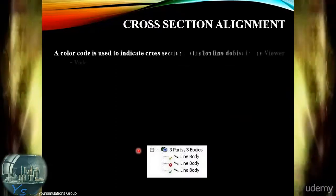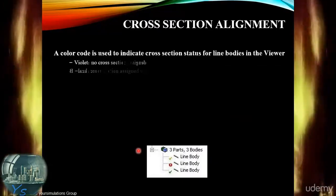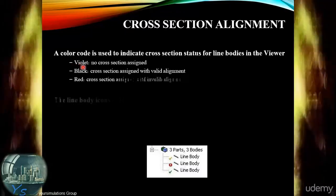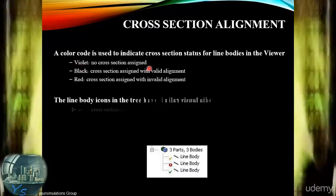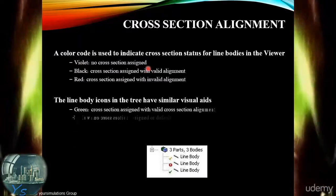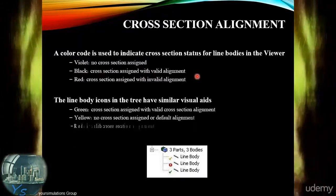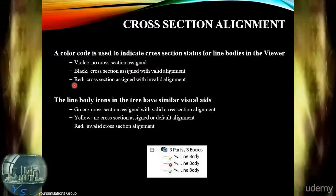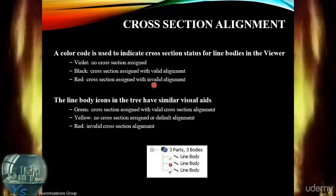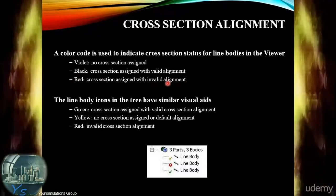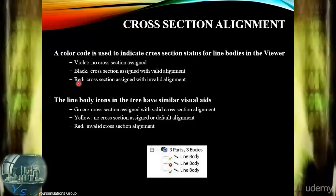There is a colour coding convention used to indicate the status of the cross-section for line bodies. If you see that your line body takes on a violet colour, that indicates no cross-section has been assigned. If it's black, a cross-section has been assigned and there is a valid alignment. If it's red, a cross-section is assigned but there is an invalid alignment, and the alignment needs some attention.